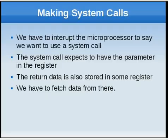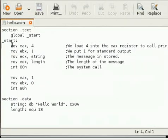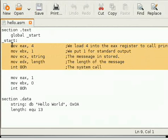Just remember these three or four steps: you have to tell the microprocessor by interrupting it that you want to use a system call; you put the parameters inside registers as arguments; the output data will also be stored in some register and it's our responsibility to fetch the data from there; and it's our responsibility to put the data in the proper order in the registers — just like remembering the order of parameters in a function. These five lines of code are essentially making just one system call.